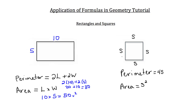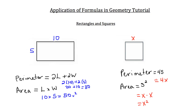Let's do a practice problem. If the square has a side length of x, to calculate the area you take that side length and multiply it by itself, giving you x squared. To calculate the perimeter you just have 4 times x, since all sides of a square are congruent.